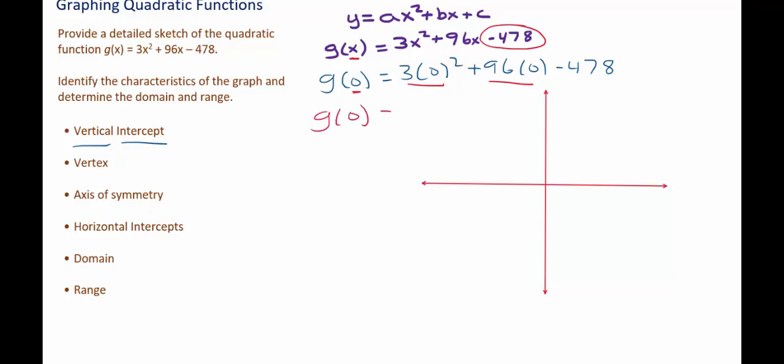So since g(0) is negative 478, we get that the vertical intercept is the point (0, -478), and we can plot that way down here.